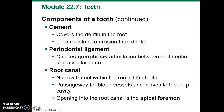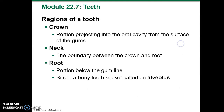The root canal is a narrow tunnel within the root of the tooth; it's a passageway for blood vessels and nerves to the pulp cavity. It opens at the apical foramen. The crown is the portion projected into the oral cavity from the surface of the gums. The neck is the boundary between the crown and the root.